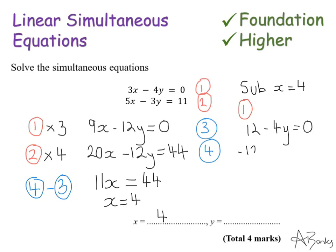So I'm going to minus 12 from both sides. So minus 4y is minus 12. Divide by minus 4. Divide by minus 4. I get y is 3. And that's my solution.